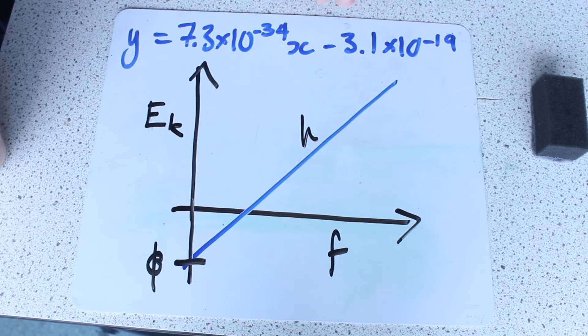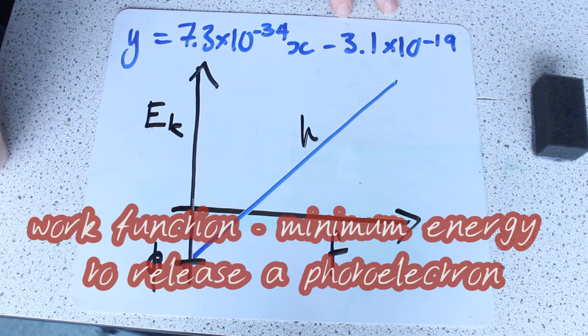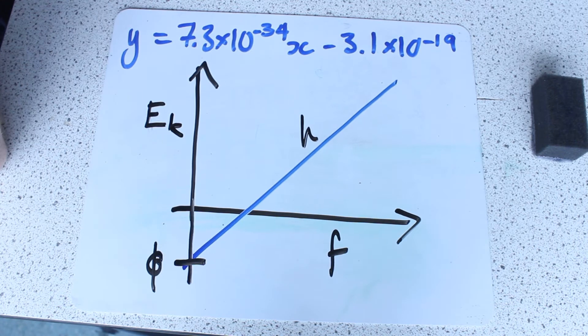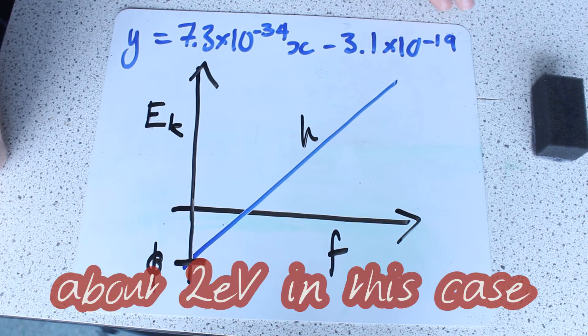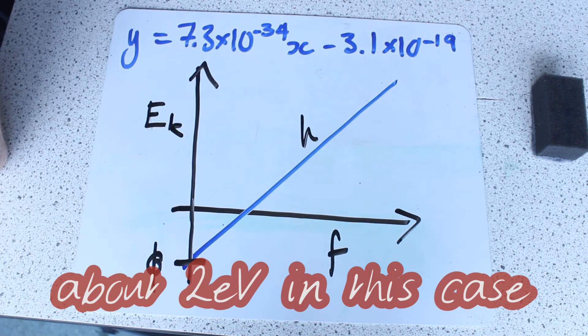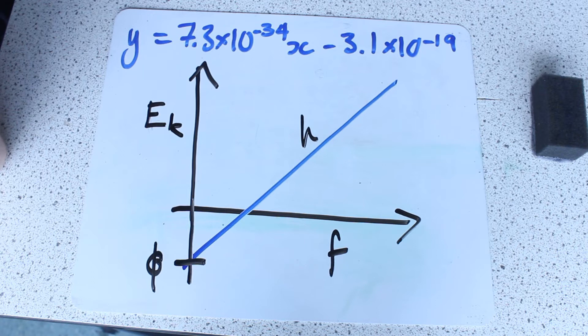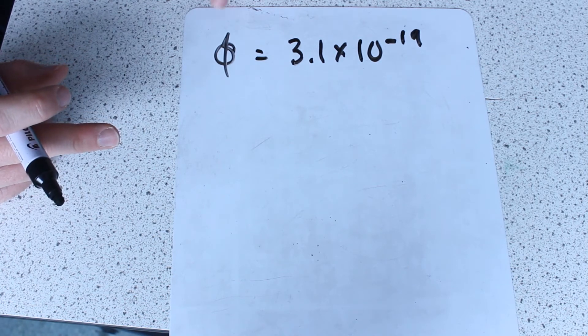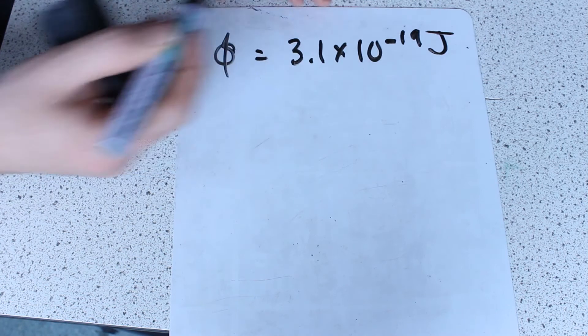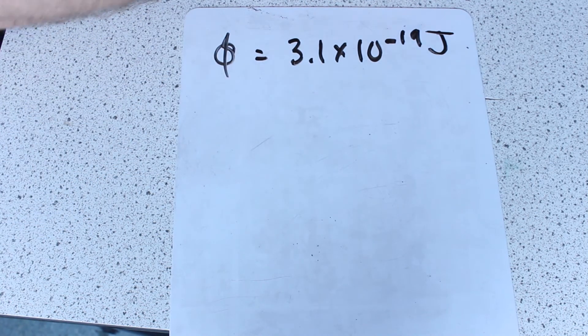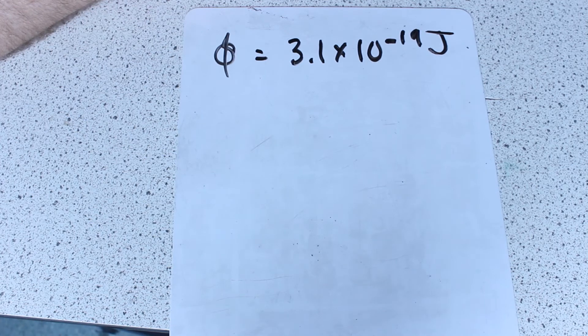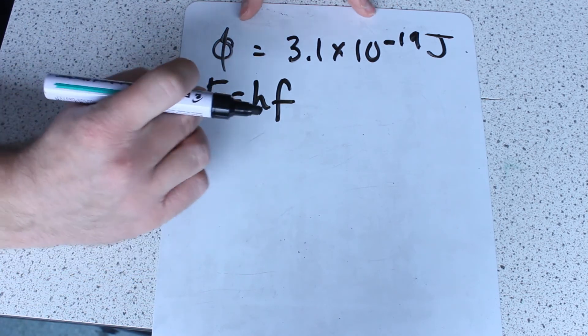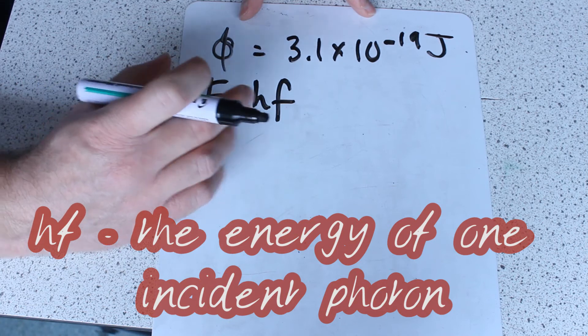And the work function, 3.1 times 10 to the minus 19, that seems about right because we're talking about one photon moving one electron up to the highest energy level with this number here. So in the order of 10 to the minus 19 is what it's going to be when we're talking about electrons having a charge of 1.6 times 10 to the minus 19. I can actually use that, and this wasn't really the aim of my experiment, but I can use that work function to try and figure out what is the threshold frequency for whatever metal that photocell is made out of. If this is the work function, and we know that that energy was given to those electrons by a photon, and this is our equation that tells us the energy of a photon.